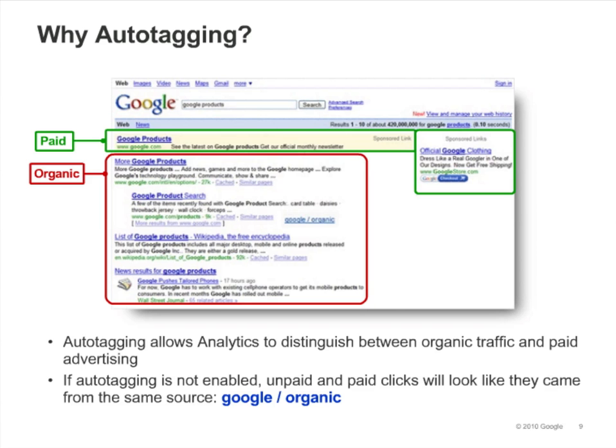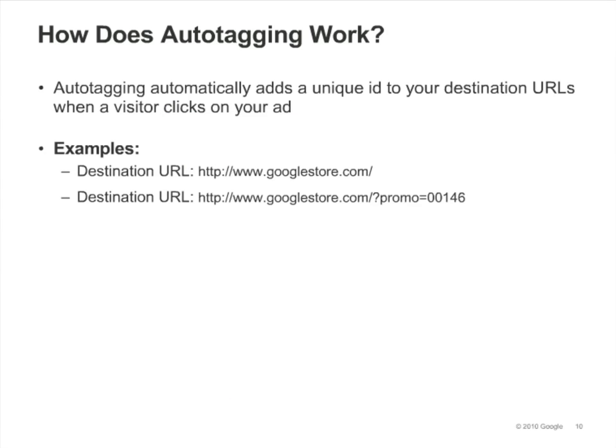Autotagging your links is important because it helps Analytics differentiate the traffic coming from Google paid listings and traffic coming from Google organic listings. If autotagging is not enabled, your Analytics reports will show that the clicks from the sponsored listings and the organic listings are both coming from the same source — Google organic. By default, Analytics considers them both to be from Google organic search results. Enabling autotagging allows you to see which referrals to your site came from your paid Google campaigns and which ones came from Google organic search results. Autotagging works by adding a unique ID, or GCL ID, to the end of your destination URLs. This unique ID allows Analytics to track and display click details in your reports.